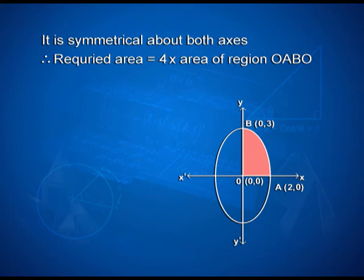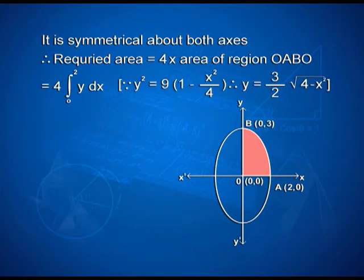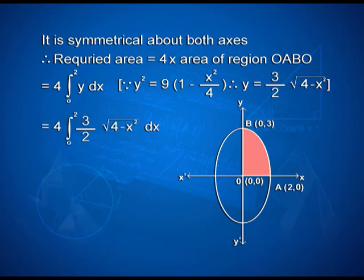Therefore, the required area equals 4 times the area of region OABO, that is 4·∫₀² y dx. Since y² = 9(1 - x²/4), therefore y = 3/2·√(4 - x²). On simplifying, we get 4·∫₀² (3/2)·√(4 - x²) dx = 6·∫₀² √(2² - x²) dx.